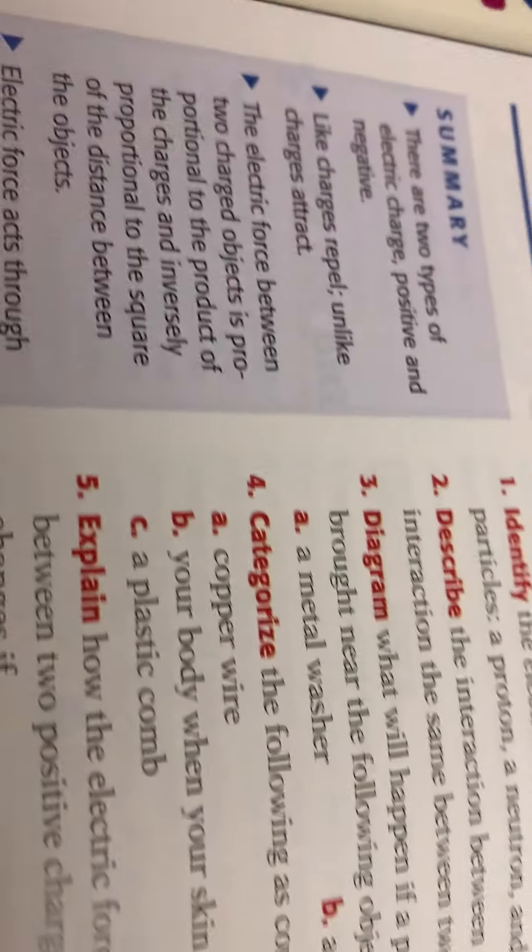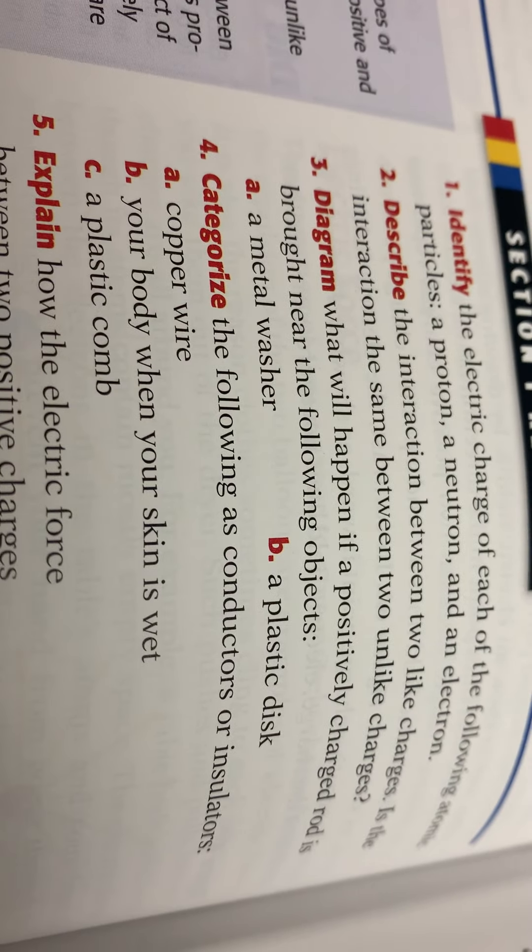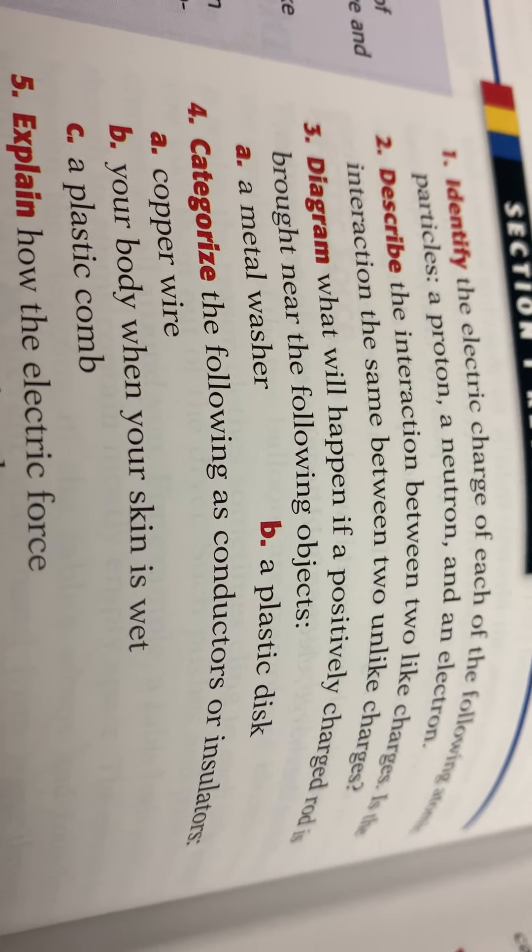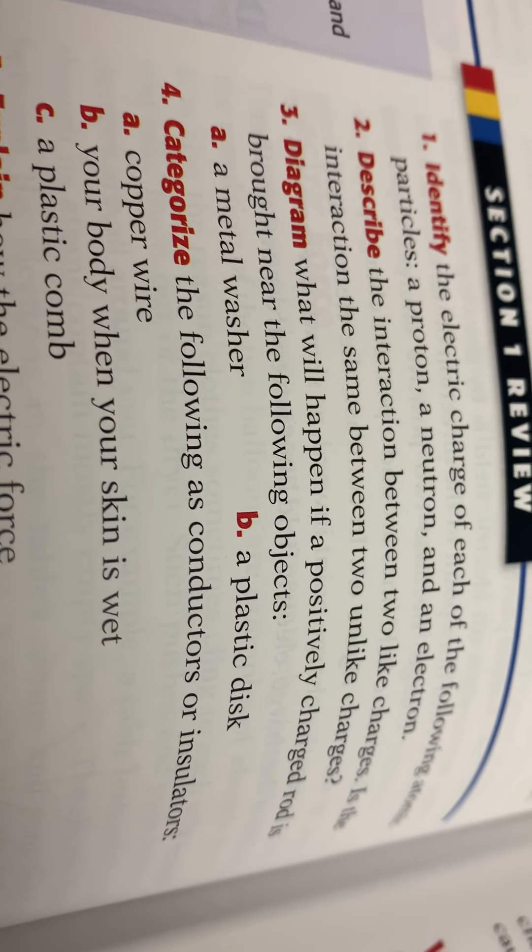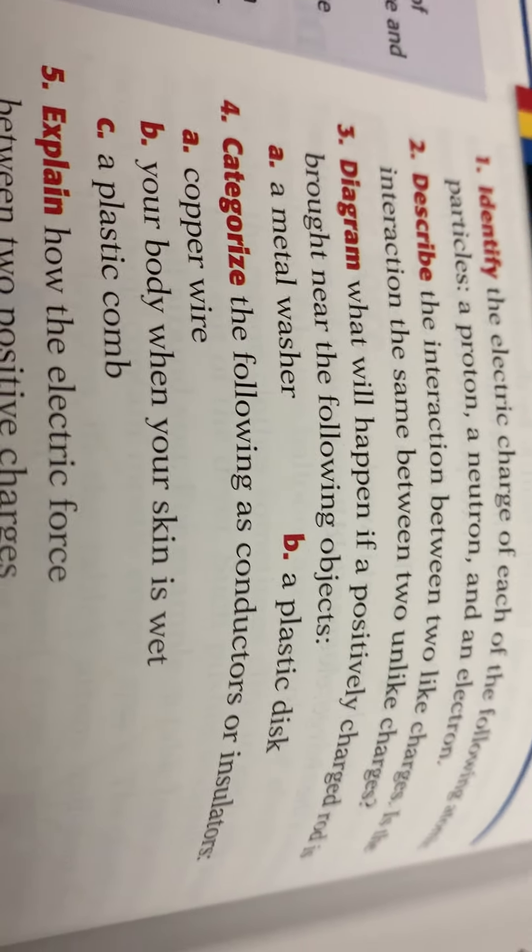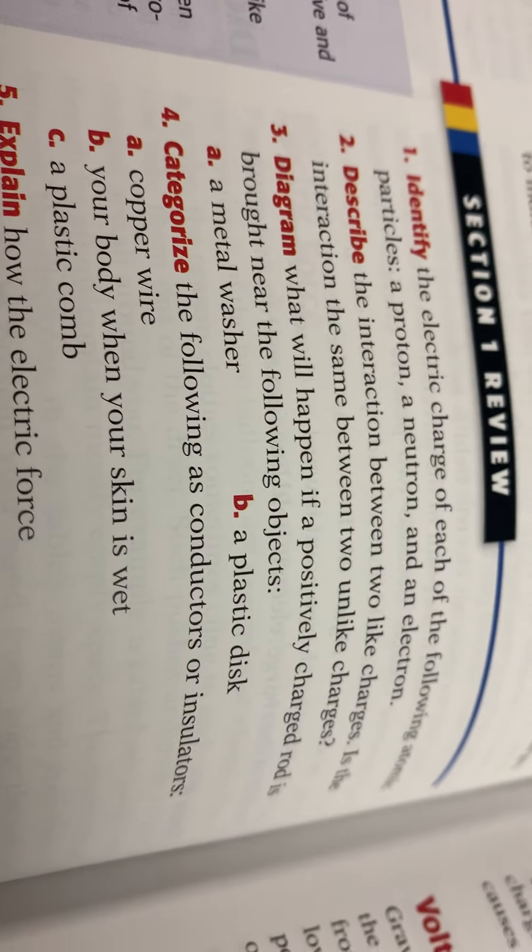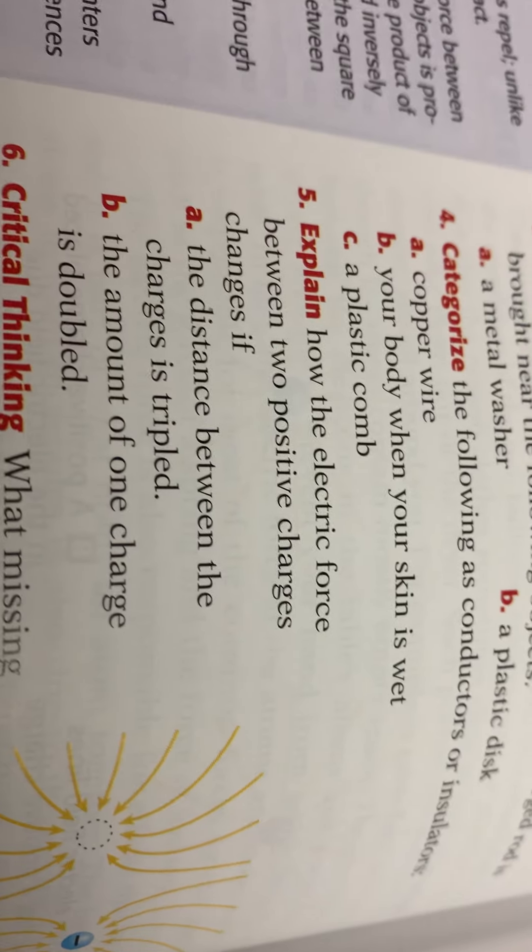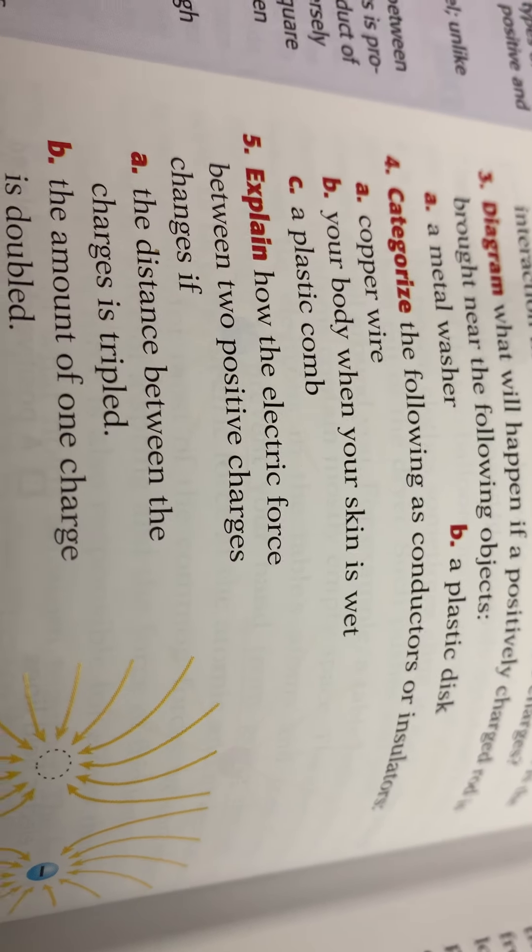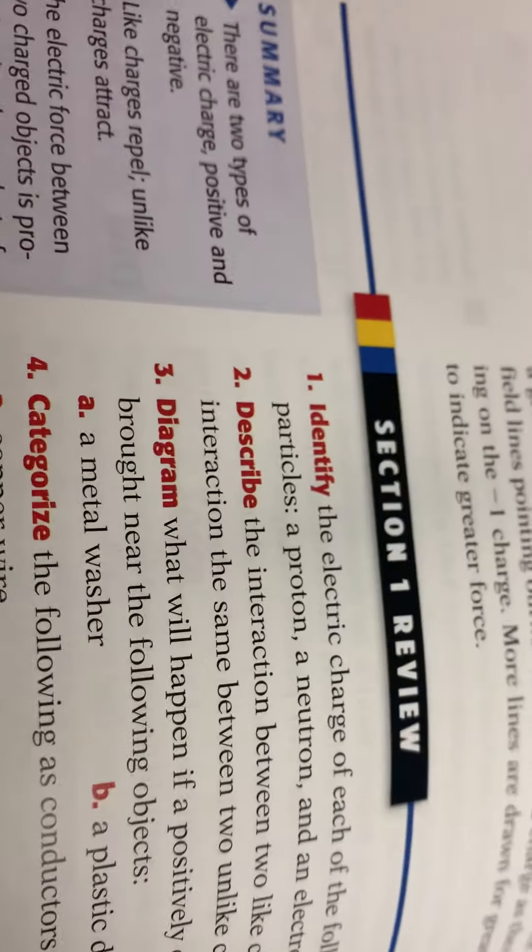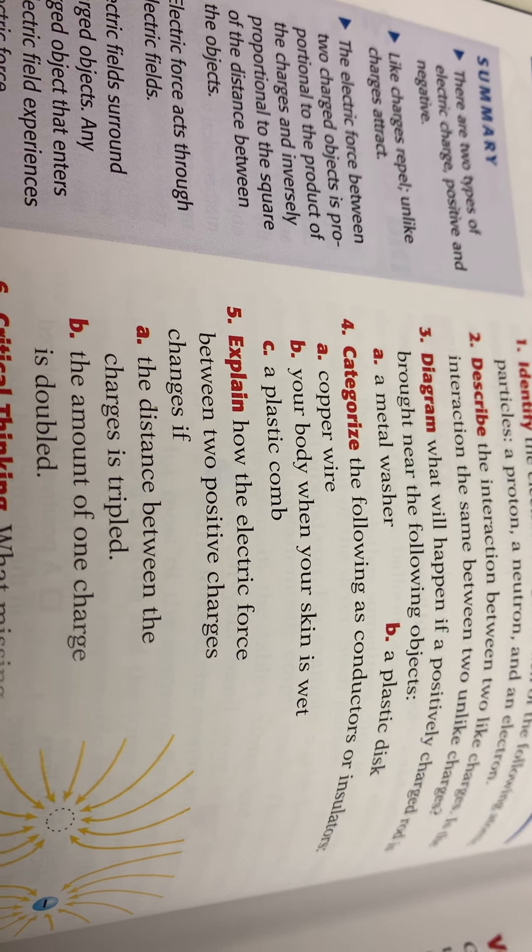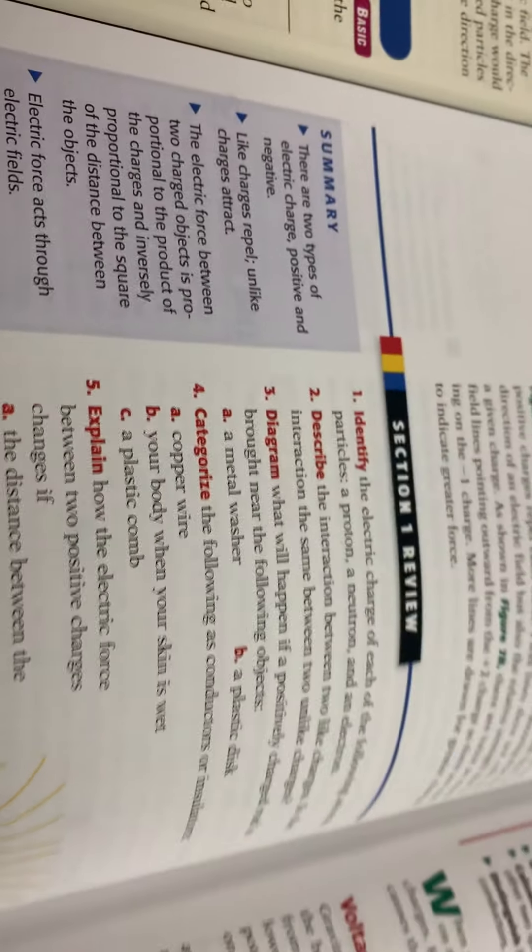And number five, explain... oh sorry, four: which of the following are conductors or insulators? Copper wire, that's a pretty good conductor, that's why we wire our houses with copper. Your body when your skin is wet, conductor. Plastic comb, insulator, so that's why if you got wet skin or your feet are wet out of a pool, very dangerous for conducting electricity. Number five, explain how the forces between two positive charges change if the distance is tripled and if the amount of charge is doubled. So for letter A, if the distance is tripled, I got the picture for you, the force will become one ninth as large. And B, the force will double.